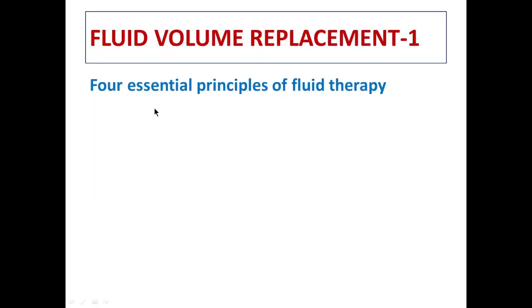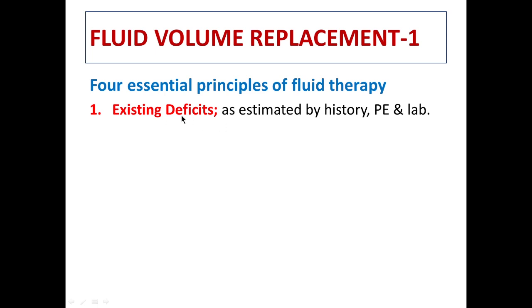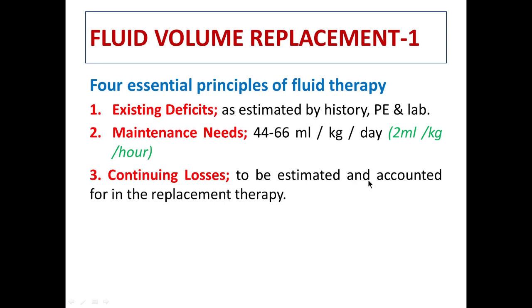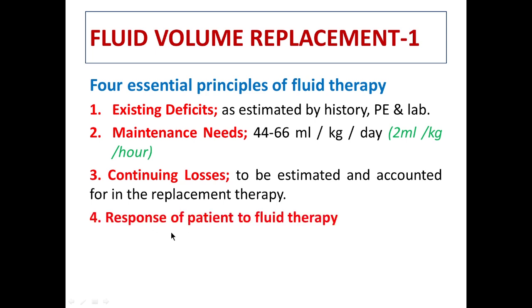For fluid volume replacement, we must evaluate at least three pillars. First is the existing deficit, estimated from history, lab tests, and physical examination. Second are the maintenance needs, which are about 2 milliliters per kilogram per hour for an animal. Third are the continuing losses — if the animal is still vomiting or having diarrhea, we must estimate and include those when calculating the total fluid requirements.